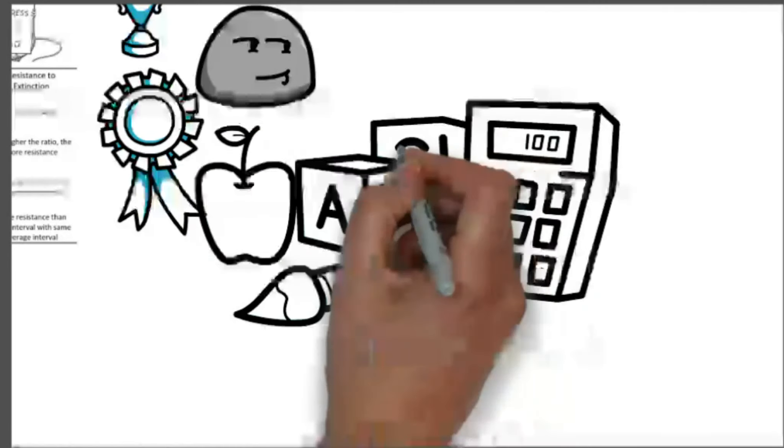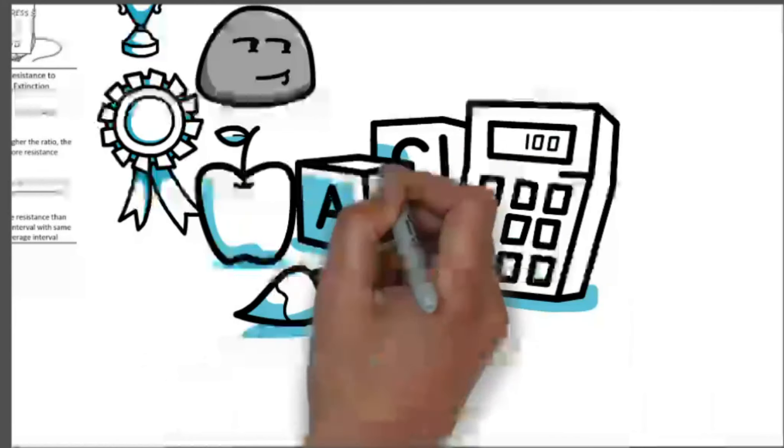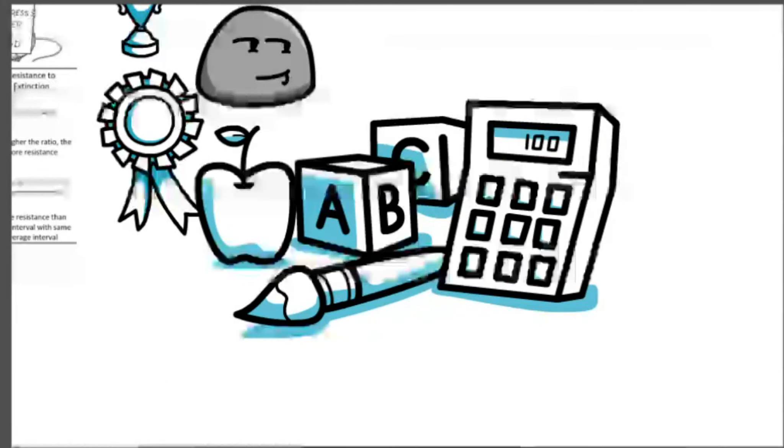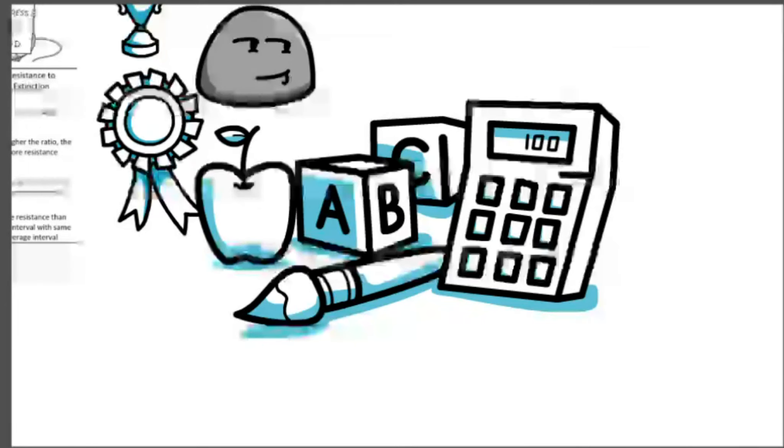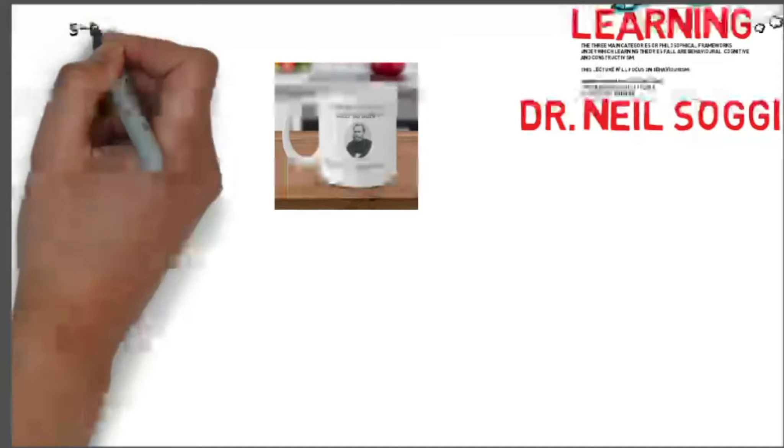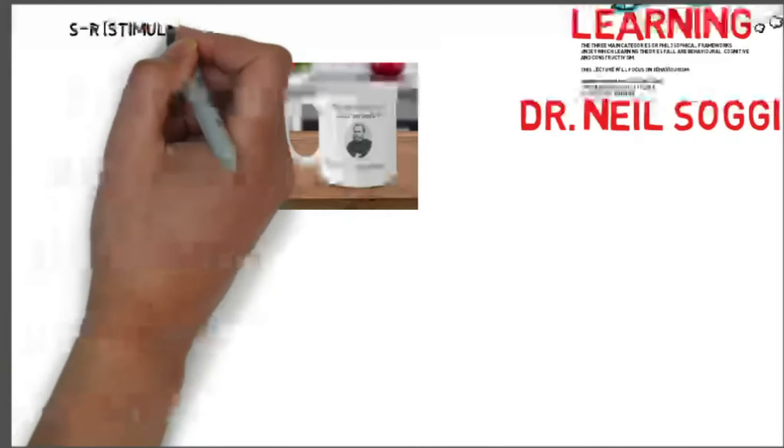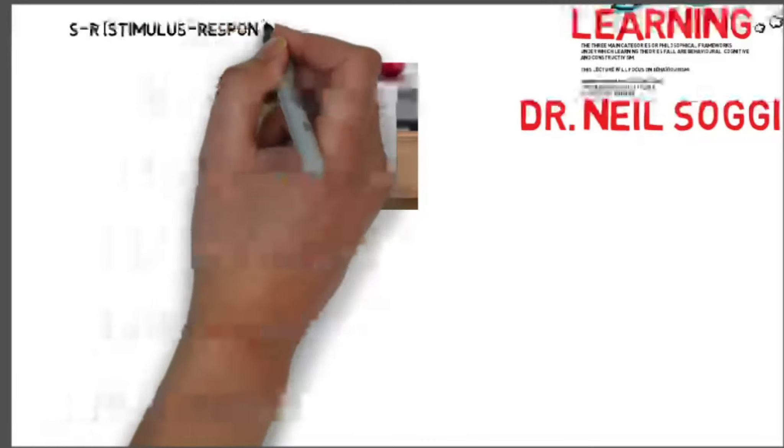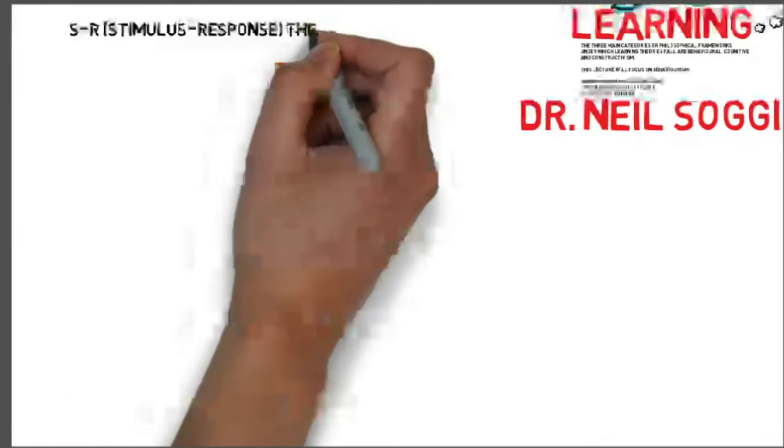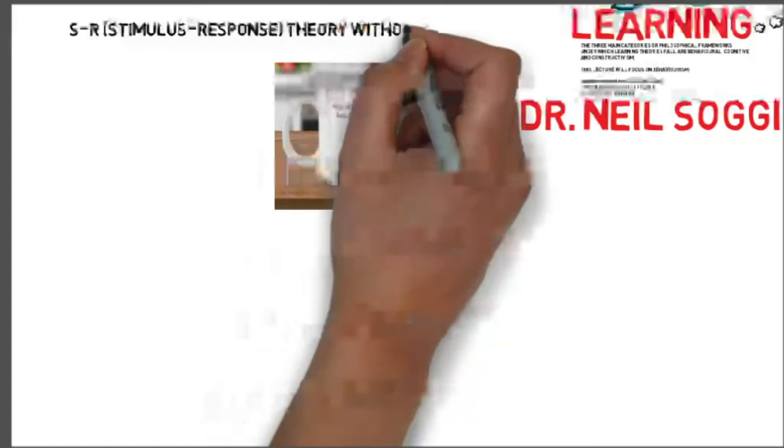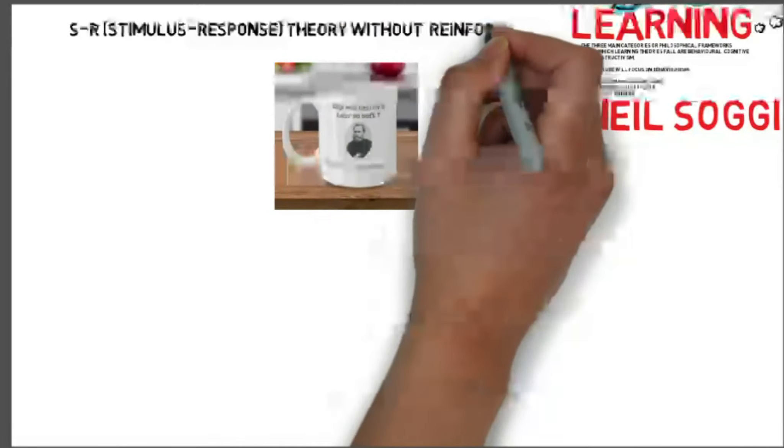We can go on to the SR theory, which is the stimulus-response theory without reinforcement, or the Pavlovian classical conditioning. Ivan Pavlov, from 1849 through to 1936, is the founder of this. In classical conditioning, that is a term used to describe learning which has been acquired through experience. One of the best known examples of classical conditioning can be found with that Russian psychologist, Ivan Pavlov, and his experiments on dogs.